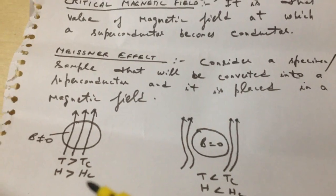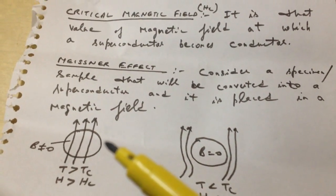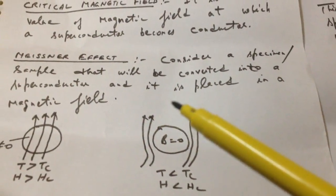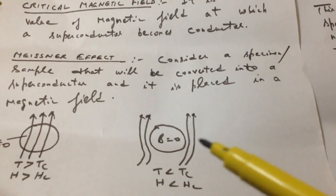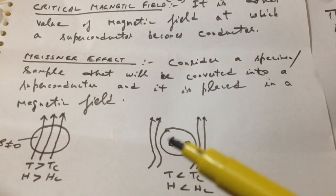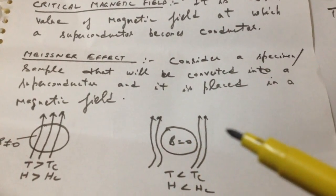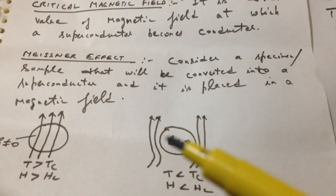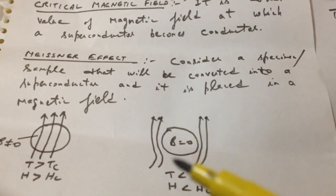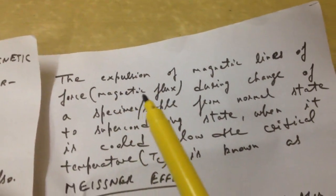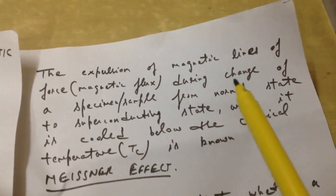When the temperature is less than the critical temperature and H is less than H_C, the magnetic lines of force are expelled. So inside the specimen, when it becomes a superconductor, the magnetic field is zero. This expulsion of magnetic lines of force — that is, magnetic flux — occurs during the change of the specimen from normal state to superconducting state.